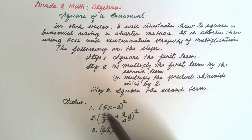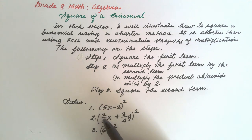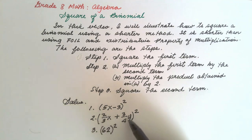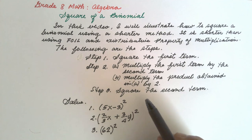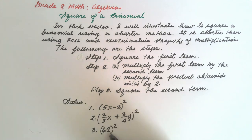We are going to solve two problems. In number one, the coefficient of x is an integer. In number two, the coefficient of x is a fraction, and the coefficient of y is also a fraction. Then we will apply this method to squaring integers, such as 62.